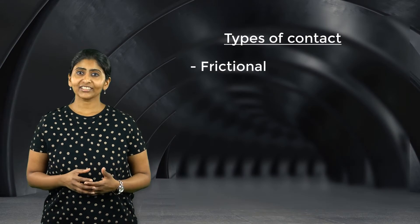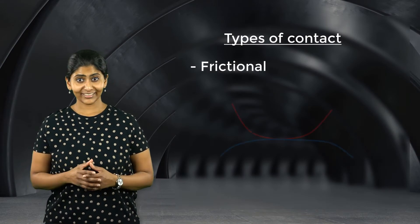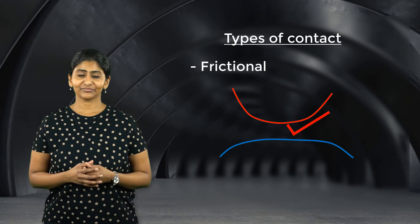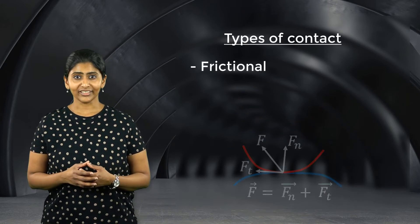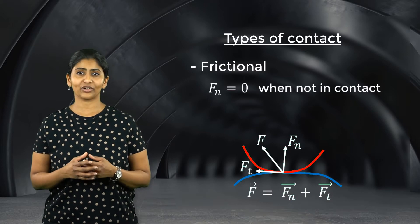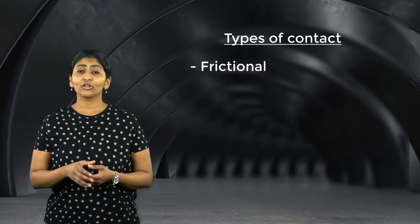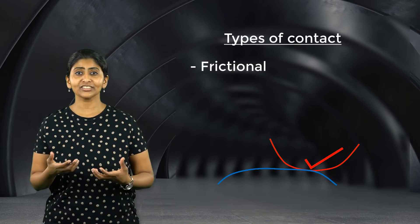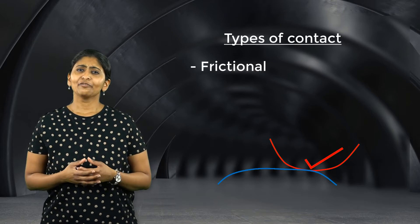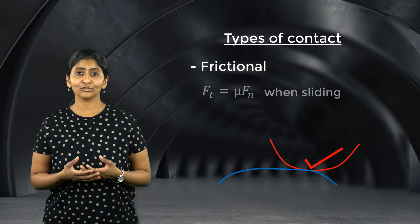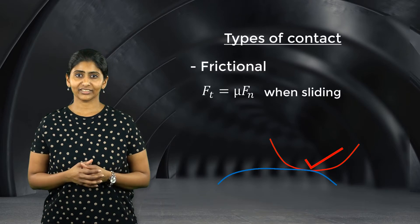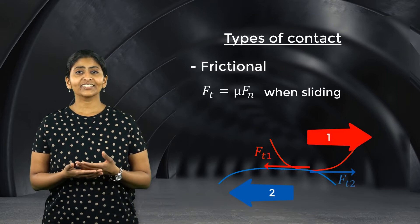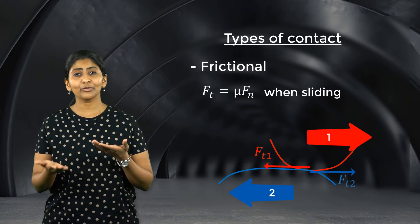The second type of contact is the frictional contact. In this case, contact surfaces cannot penetrate each other but they can separate from each other. The normal contact force Fn is equal to zero when the surfaces are not in contact. The surfaces can also slide over one another provided the applied tangential force exceeds the friction between the two surfaces. When sliding occurs, frictional forces given by Coulomb's law act on both surfaces, acting in the tangential direction and opposing the relative motion between the two contact surfaces.